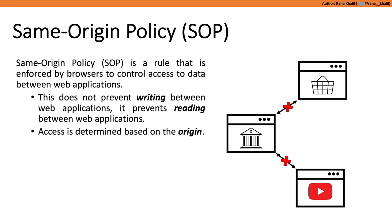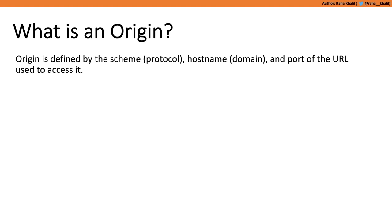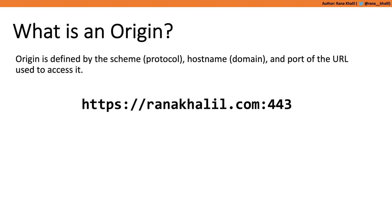Let's get into the nitty-gritty details. The SOP checks the origin of the request when it receives it. Two URLs are defined to have the same origin if the protocol (or scheme), the hostname (or domain), and the port are all the same. For example, if my website ranakalil.com running on port 443 makes a request, the origin is made up of the scheme (https), the domain (ranakalil.com), and the port (443). If the port is not specified, it defaults to the port used by the scheme — 443 for https and 80 for http.